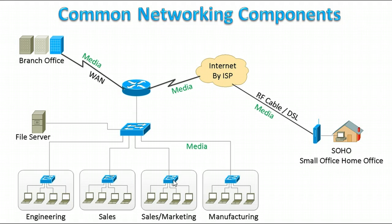All these switches are connected to a more powerful switch, with uplink ports. If the regular ports are 100 Mbps — 100 megabits per second — this uplink port is usually at the higher speed of 1 gigabit Ethernet.